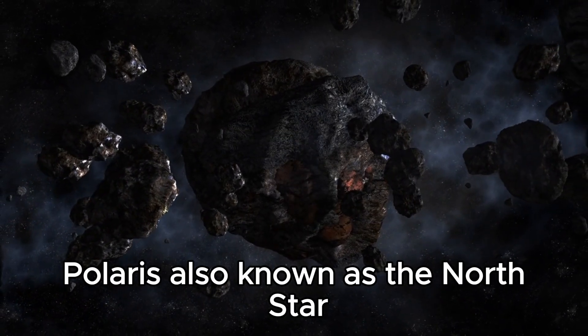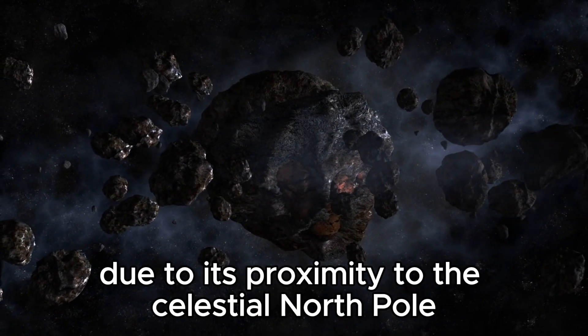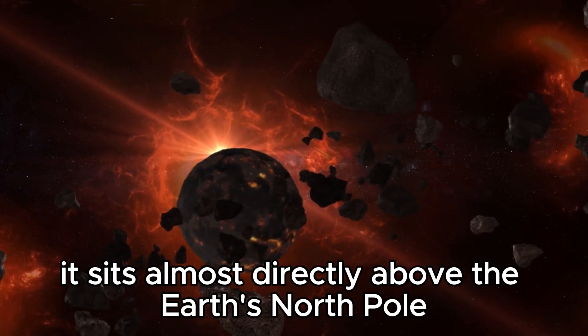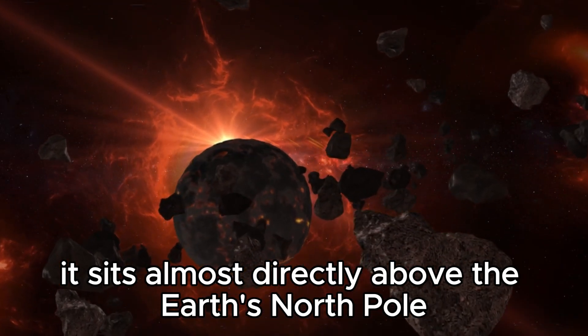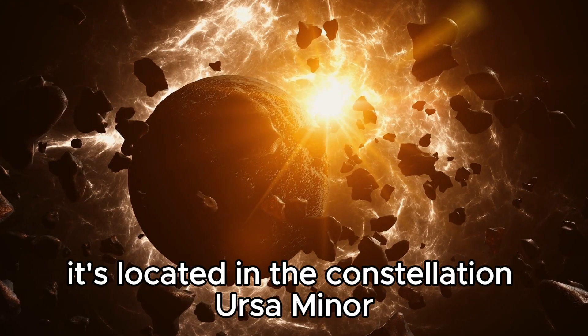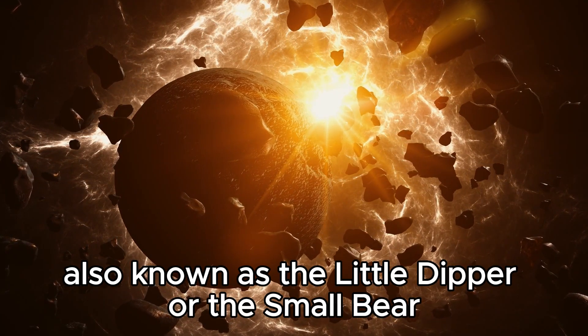Polaris, also known as the North Star or Pole Star, holds a special place in the sky due to its proximity to the celestial North Pole. It sits almost directly above the Earth's North Pole, making it appear nearly stationary in the northern sky. It's located in the constellation Ursa Minor, also known as the Little Dipper or the Small Bear.